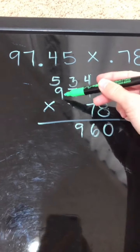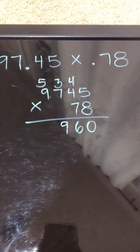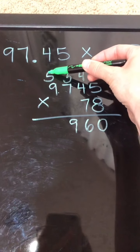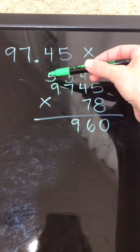Then 8 times 9 gives me 72, 73, 74, 75, 76, 77.